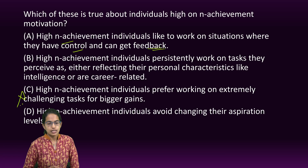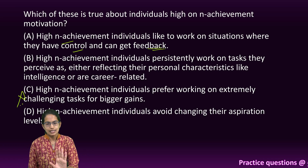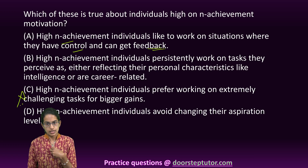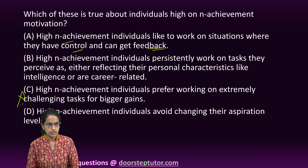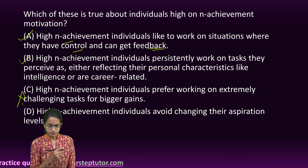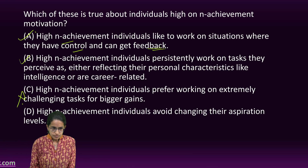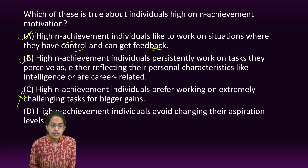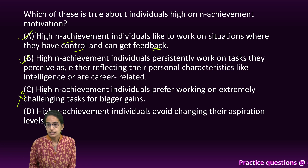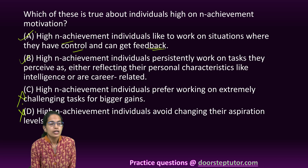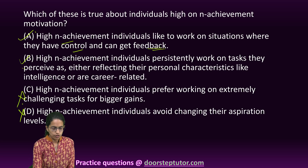A person with high need for achievement would like to work in situations where they have control and can get feedback. They don't want extremely challenging tasks because they are afraid of failure. These individuals constantly work on tasks, considering them a reflection of their own self — related to career and intelligence, with a maintainable persistence level. However, a person with high need for achievement would not avoid changing their aspiration levels, so option D is incorrect. A and B are the right options.